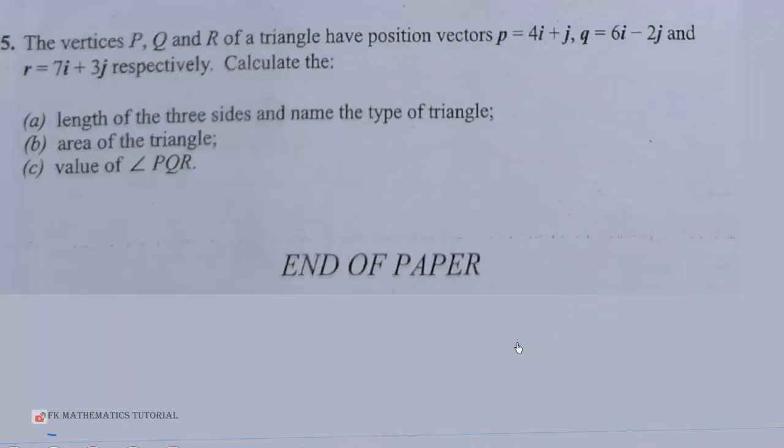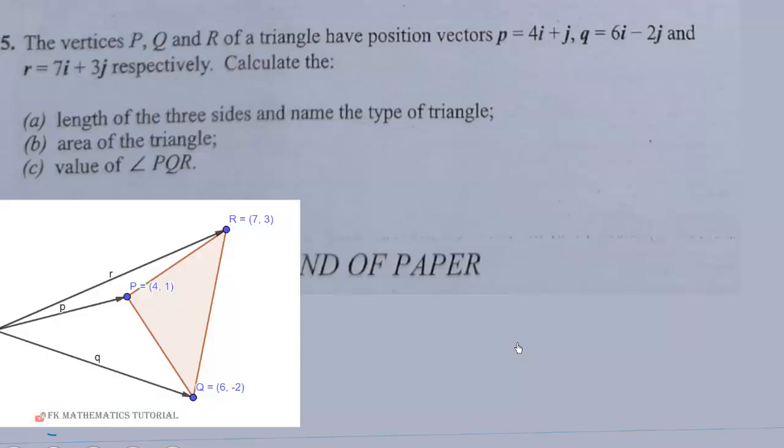Now, let's look at question number 15. Let's begin. The vertices P, Q, and R of a triangle have position vectors p = 4i + j, q = 6i - 2j, and r = 7i + 3j, respectively. Calculate the length of the three sides and name the type of triangle, area of the triangle, then value of angle PQR. So, let's begin.